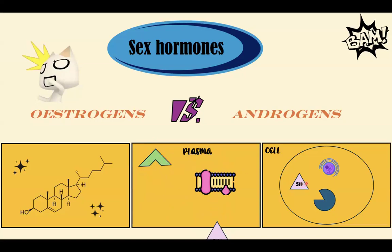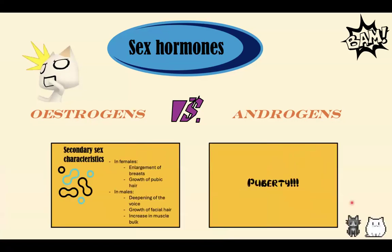Inside the cell, the sex hormone binds to an androgen receptor and translocates to the nucleus, where it affects the transcription of certain genes coding for certain proteins — eventually leading to translation of those proteins. These proteins have different functions in males and females. In females, they cause enlargement of breasts and growth of pubic hair. In males, they cause deepening of the voice, growth of facial hair, and increase in muscle bulk. These hormones are really important in puberty, where an influx causes the onset of puberty and the appearance of secondary sex characteristics.